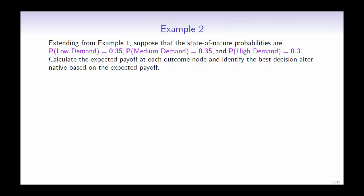Continuing on from example 1, suppose that the probability of a low demand is 35%, the probability of a medium demand is also 35%, and the probability of a high demand is 30%. Calculate the expected payoff at each outcome node, and identify the best decision alternative based on the expected payoff.